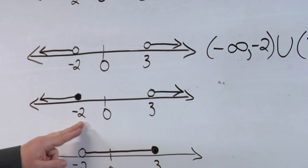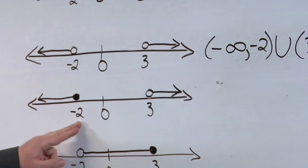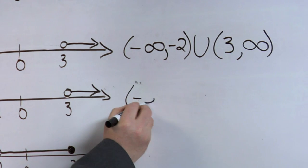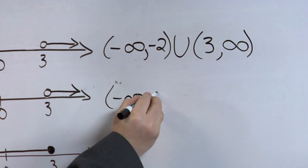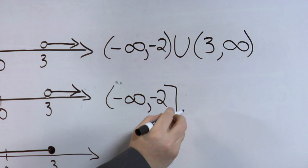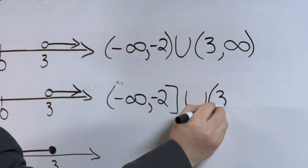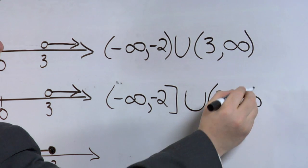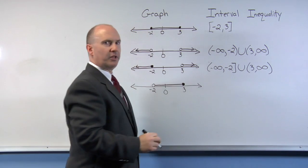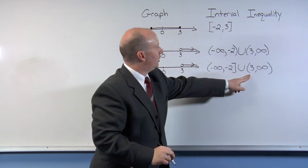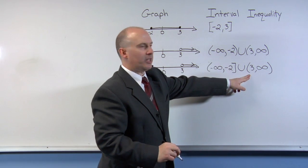For the third example, this time we have a square bracket because negative 2 is included. So we'll have negative infinity to negative 2 with a square bracket, union, positive 3 to positive infinity. Notice again, it's an open circle, so we're going to have a parenthesis representing next to the 3.